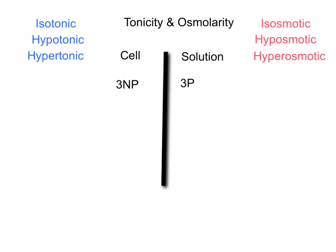In the fourth situation, we have introduced a penetrating particle in the solution. There are three non-penetrating in the cell and three penetrating in the solution. For osmolarity, it does not matter whether particles are penetrating or non-penetrating — because both numbers are the same, the solution is isoosmotic. The cell is isoosmotic to the solution, and the solution is isoosmotic to the cell.